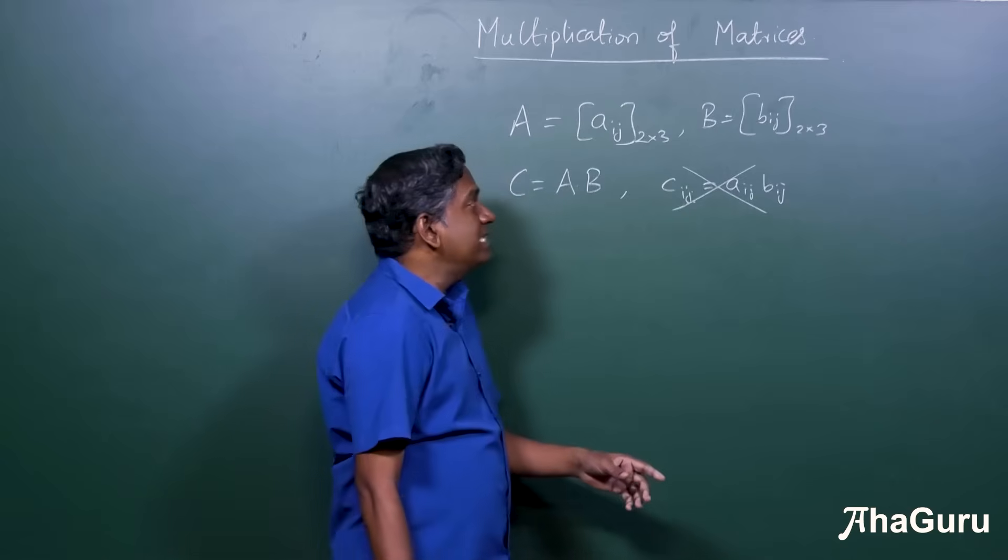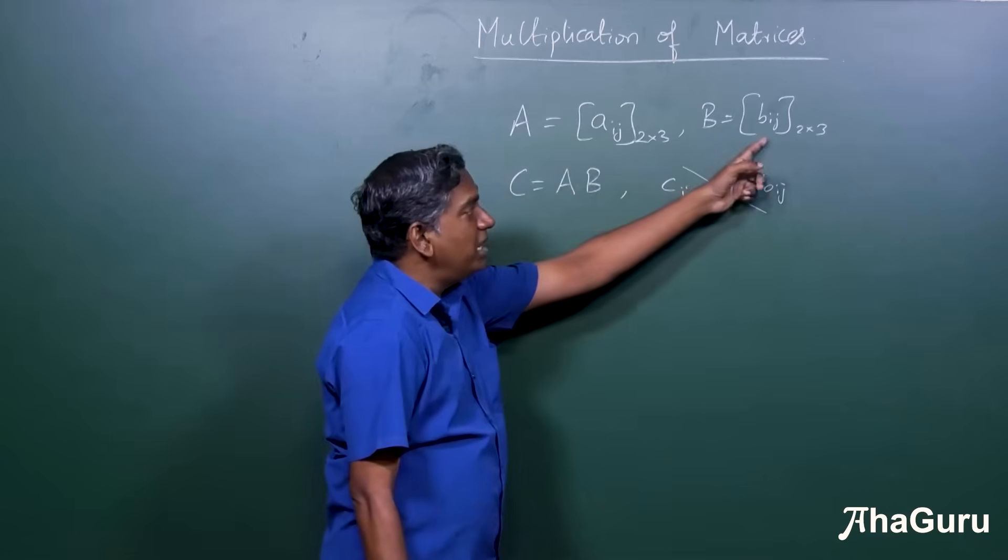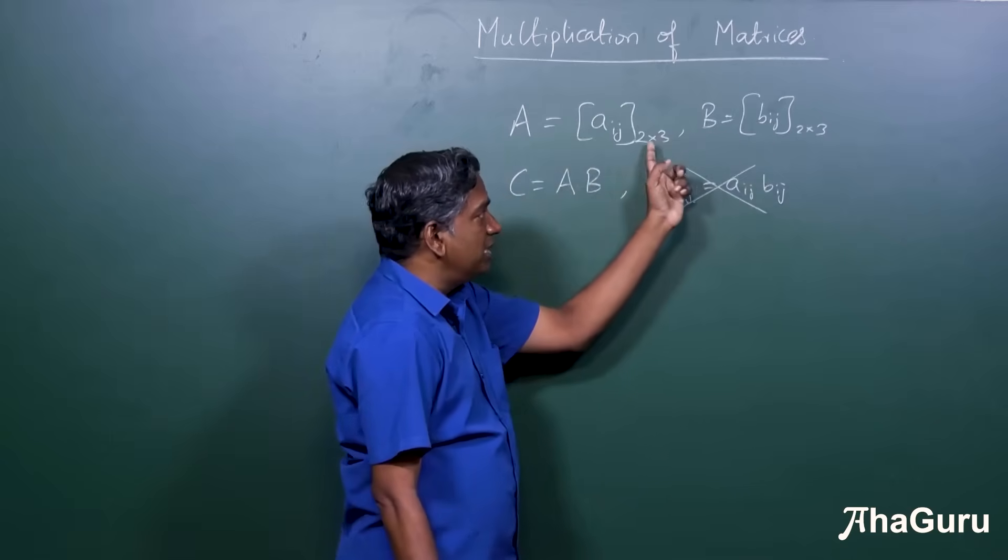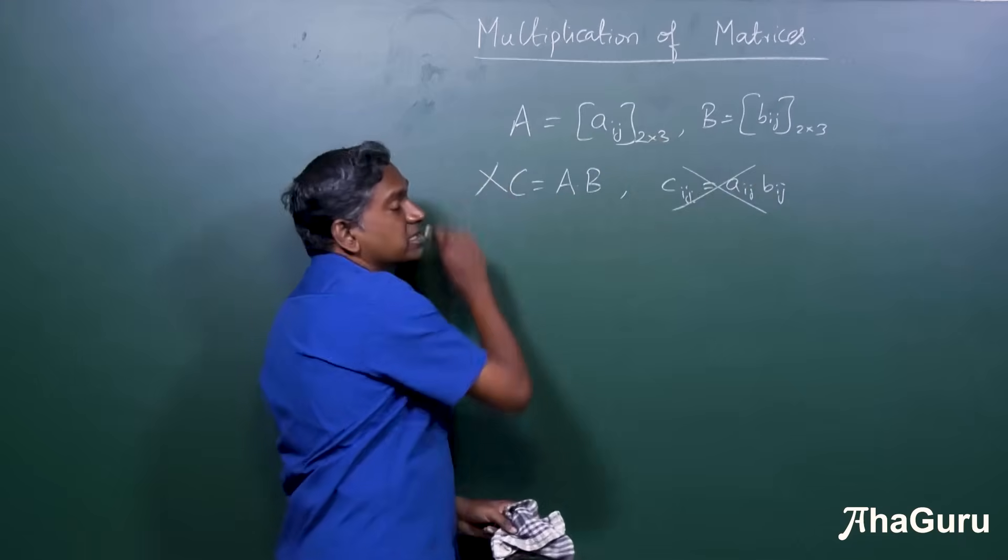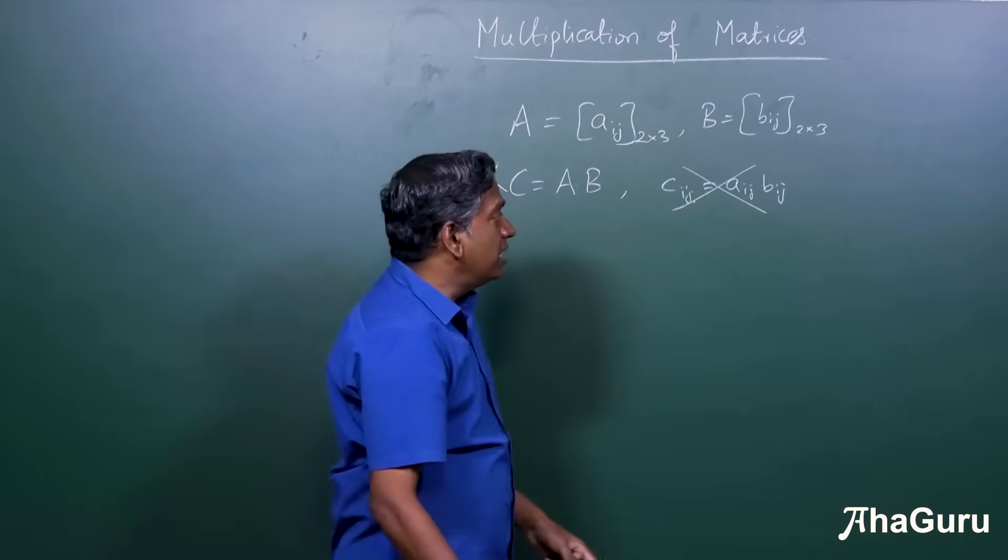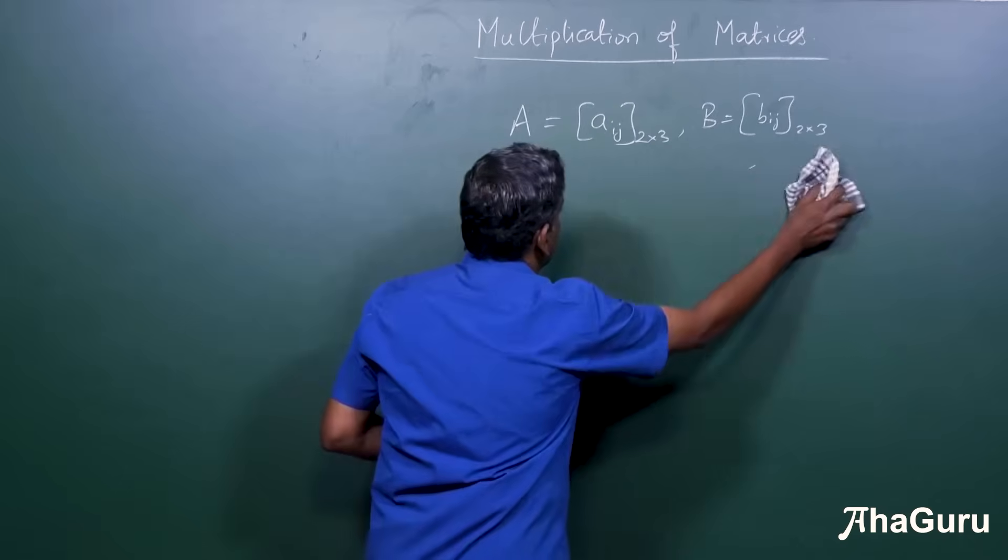In fact, we are going to say that if A and B are matrices of the same order like this, 2 by 3 and 2 by 3, you can't even write this. So here, let's remove this.